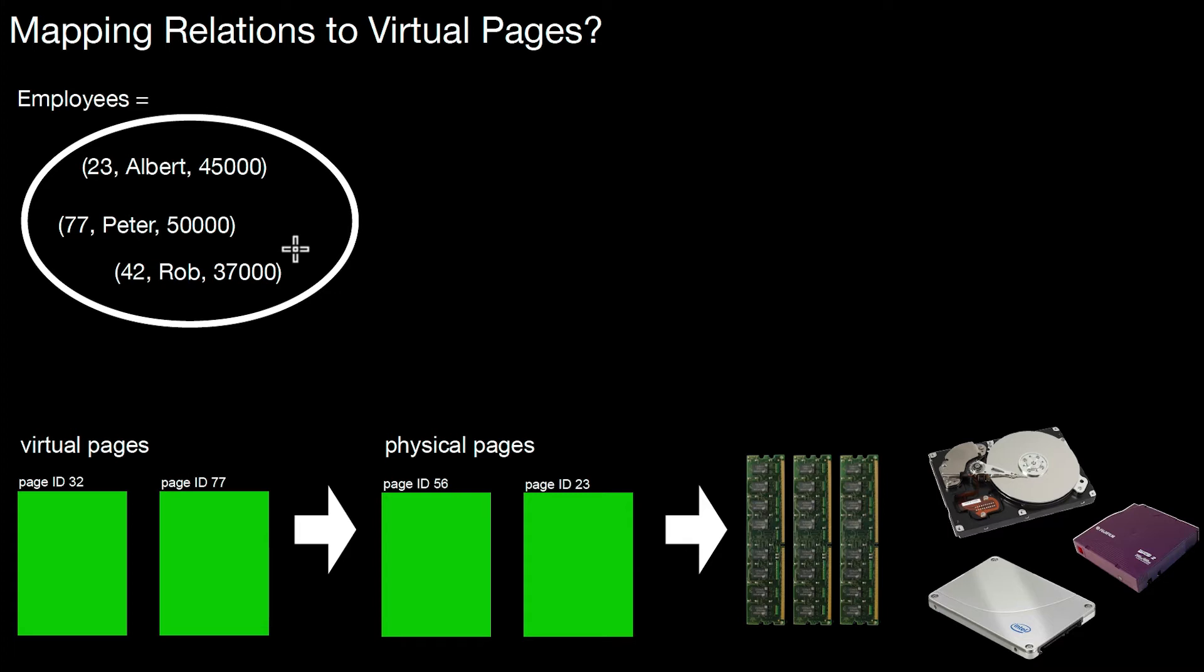So what is a relation? Just to remember, a relation is a set of tuples. A set doesn't have duplicates and doesn't have an order among the different tuples. So the question is, how do we map a relation to virtual pages? That is the concern of the following videos.